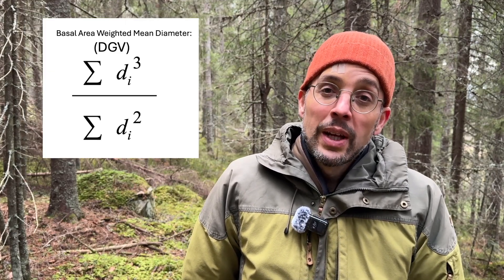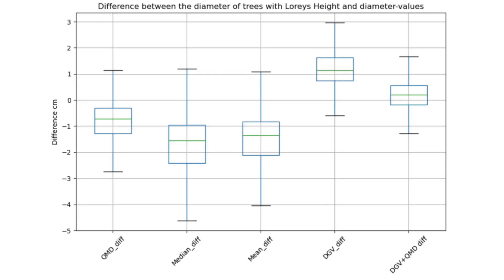We have tested this, looking at data from a lot of harvested areas here in Sweden, with individual trees with diameter and heights. We concluded that QMD is closer to the tree with Loris height, but a combination of both is the best. So if you select a tree with the average between QMD and DGV, you get closest to the Loris height tree.